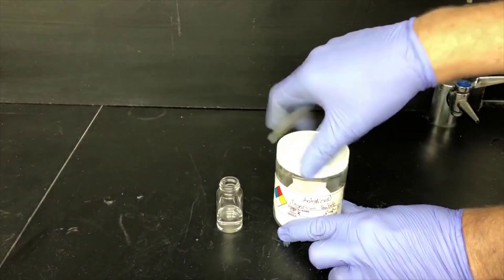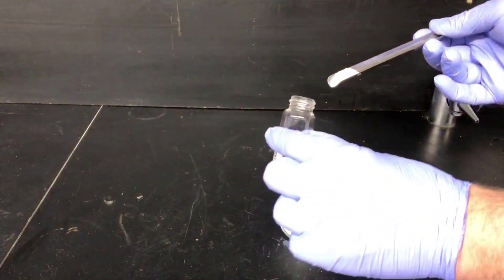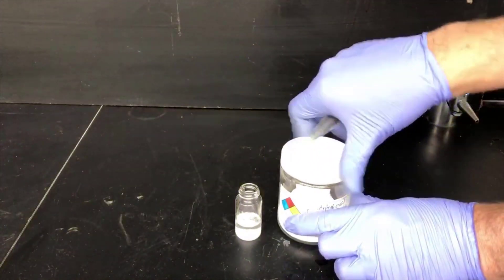Now we'll dry the organic layer using anhydrous magnesium sulfate. We're going to add enough to make a thin layer on the bottom, maybe 2 millimeters thick. Add about this much magnesium sulfate and swirl it around.